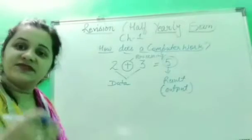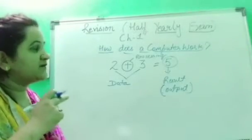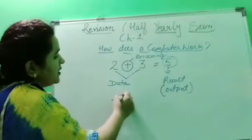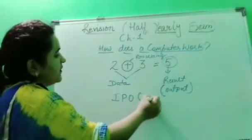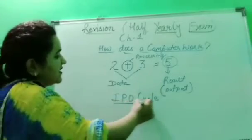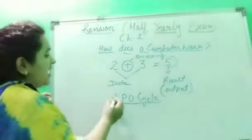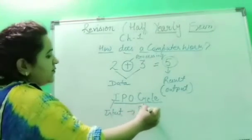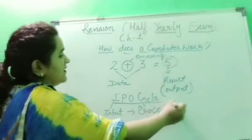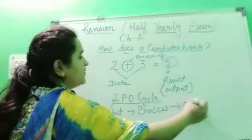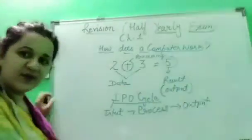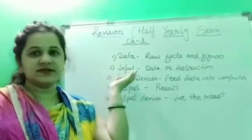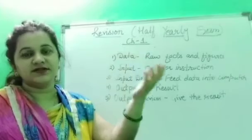So this is how a computer works — it accepts the data, processes it, and gives the result. Through this we have come to know that a computer follows the IPO cycle to perform any task. I stands for Input, P stands for Process, and O stands for Output.